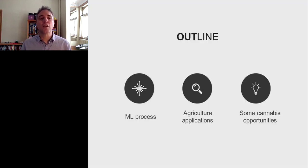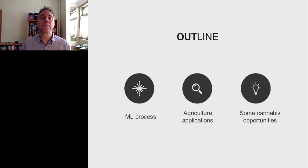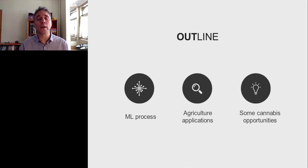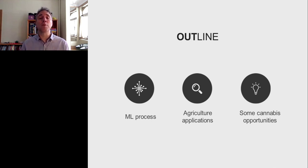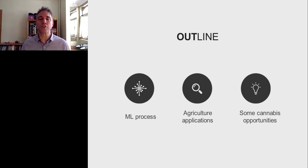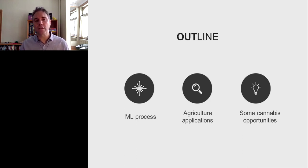What I want to do today is go quickly through the machine learning process to give you insights into how you build a machine learning model. Then talk about some agricultural applications — non-cannabis agricultural applications of machine learning. I'm not aware of any applications of machine learning that have been published related to improving the efficiency or profitability of growing cannabis. I am aware of some studies that have proposed using machine learning to identify cannabis for enforcement of laws, but not specifically to improve profitability of growing cannabis. Those agricultural examples will be relevant to cannabis, as you'll see.